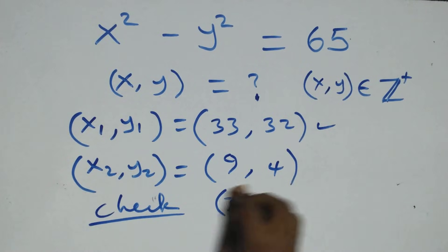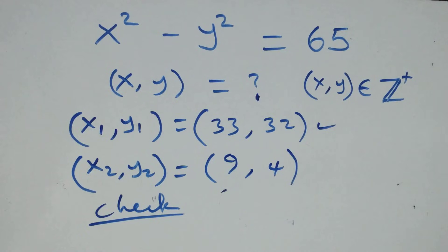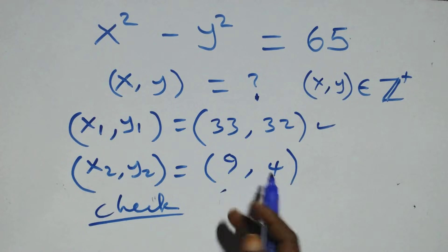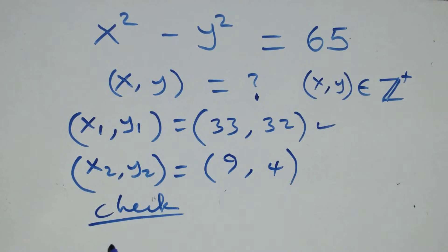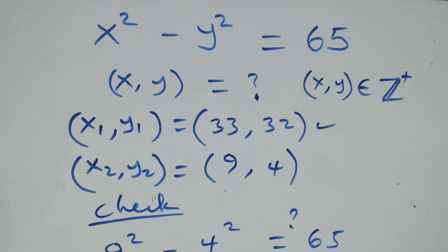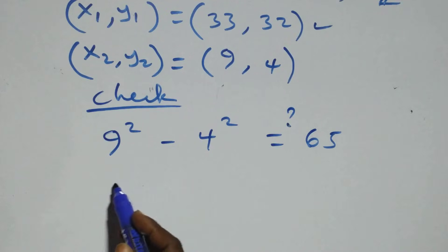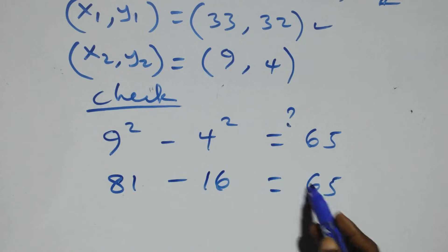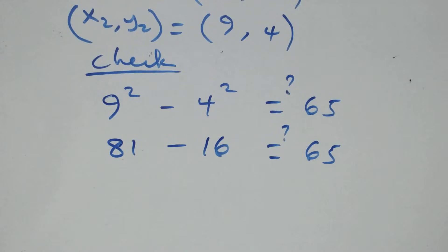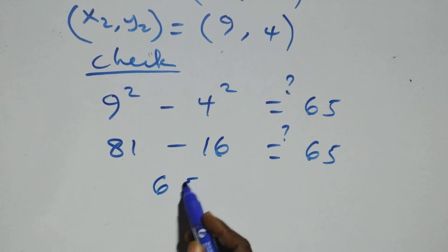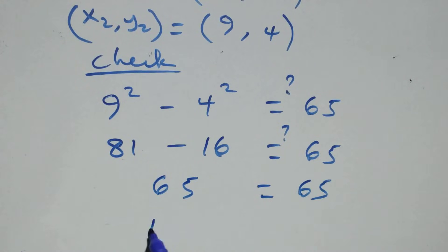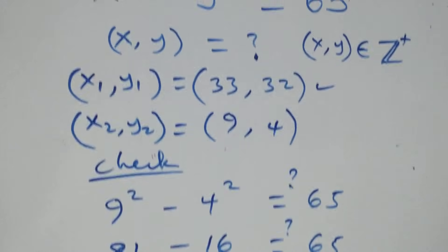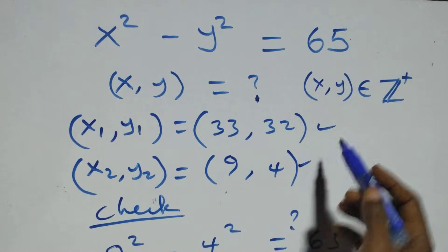We also check the second solution (9, 4). The equation becomes x squared minus y squared: 9 squared minus 4 squared. 9 squared is 9 times 9, that's 81. 4 squared is 4 times 4, that's 16. So 81 minus 16 equals 65, which equals 65 on the right-hand side. Left hand side equals right hand side, and therefore the second solution (9, 4) also satisfies the given equation.